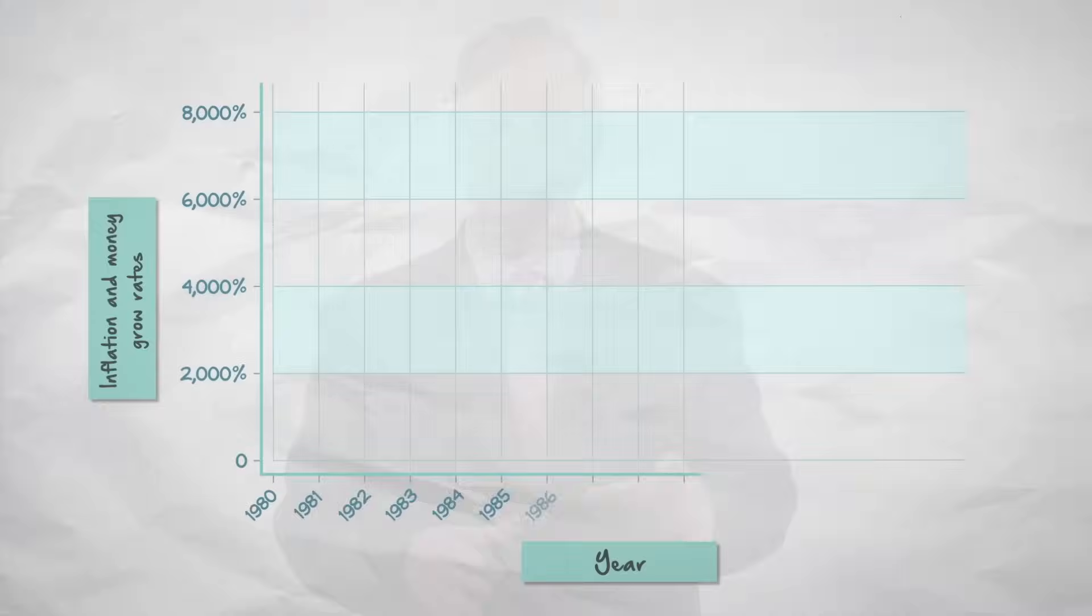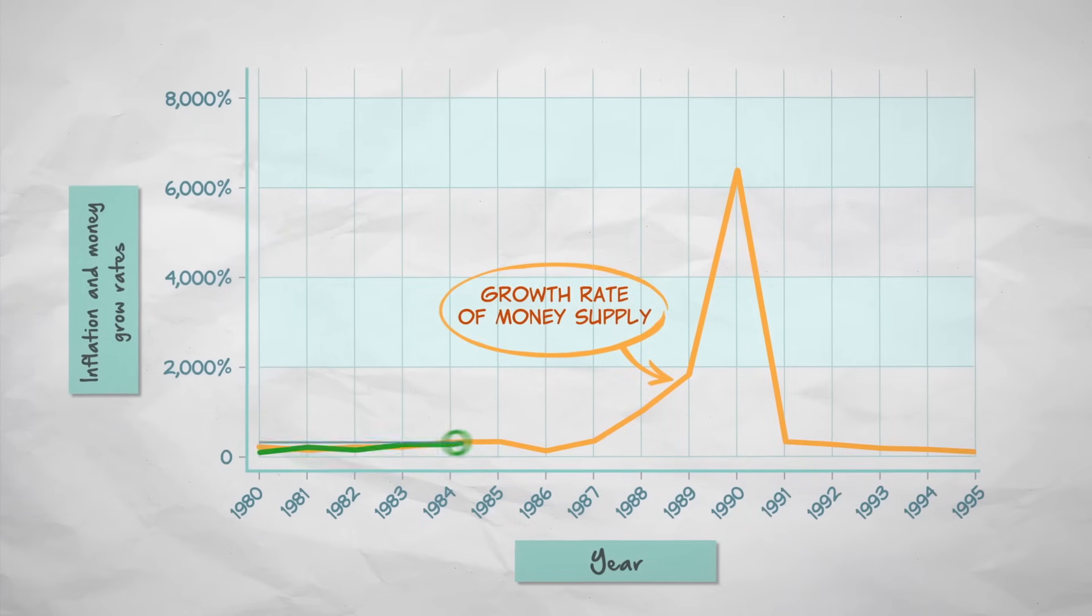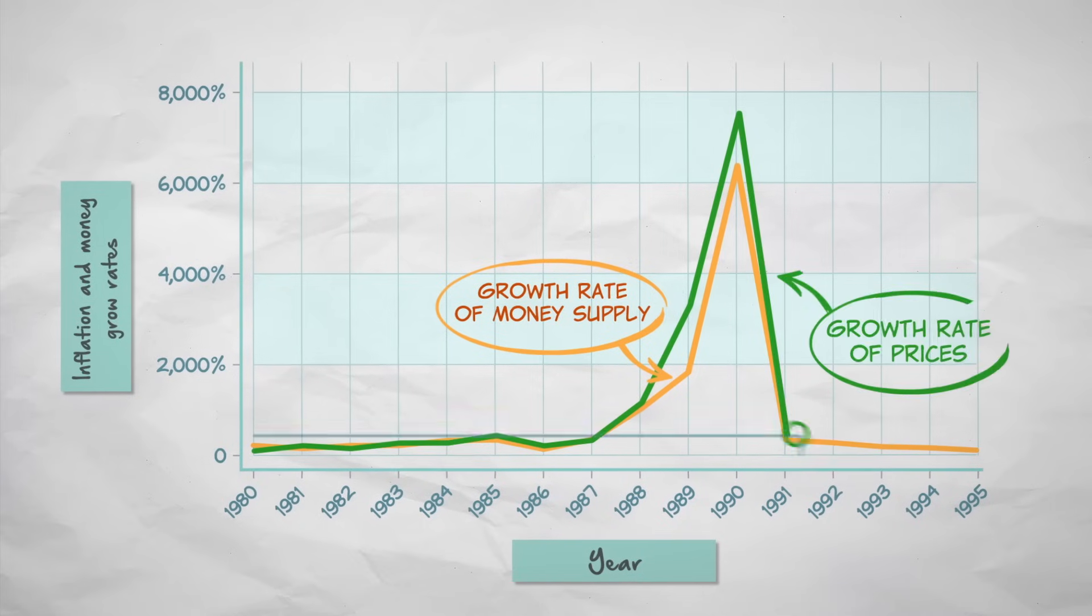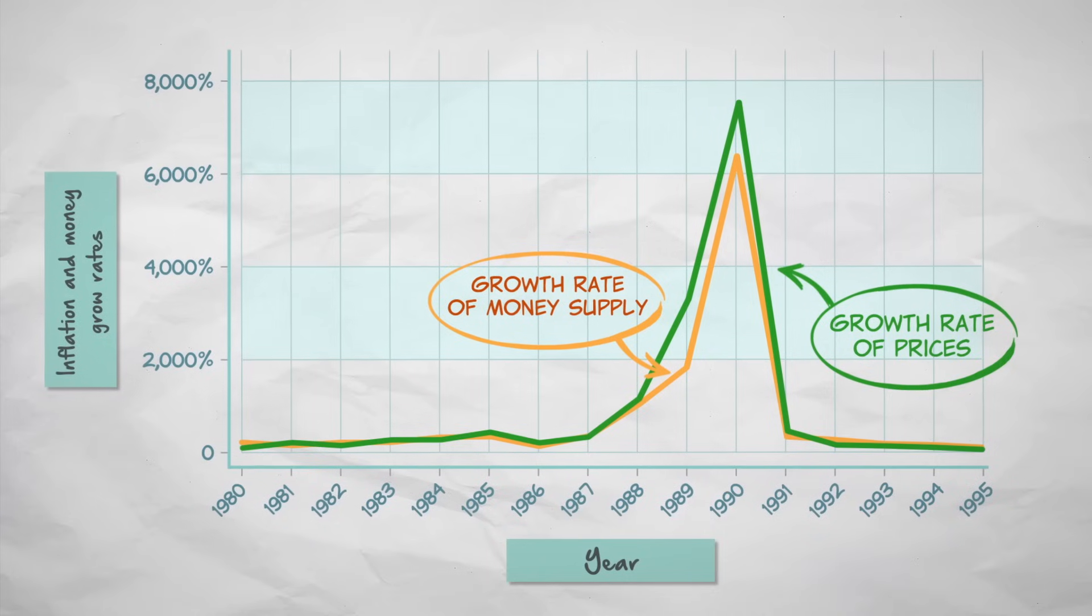Here's the same data from Peru as before, except now we're looking at the growth rate of the money supply and the growth rate of prices. As the growth rate of the money supply increased, so did the inflation rate.